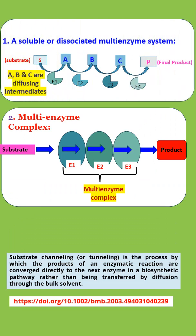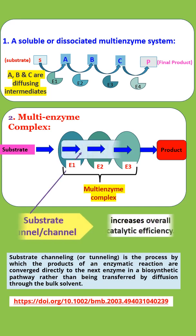In a soluble and dissociated multi-enzyme system, intermediates are diffused through bulk solvent, whereas in a multi-enzyme complex, enzymes are closely associated with each other and due to the formation of substrate channels, diffusion of intermediates is less, which increases the overall catalytic efficiency of the multi-enzyme complex.